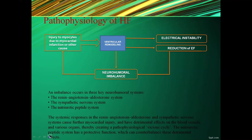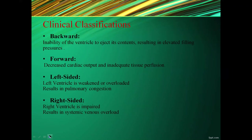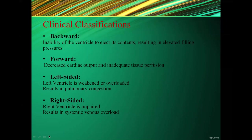On clinical classifications: heart failure is divided into backward, forward, left-sided, and right-sided types. In backward failure, there is inability of the ventricles to eject content, resulting in elevated filling pressures. In forward failure, there is decreased cardiac output and inadequate tissue perfusion. In left-sided heart failure, the left ventricle is weakened or overloaded, leading to pulmonary edema. In right-sided heart failure, the right ventricle is impaired, resulting in systemic venous overload.